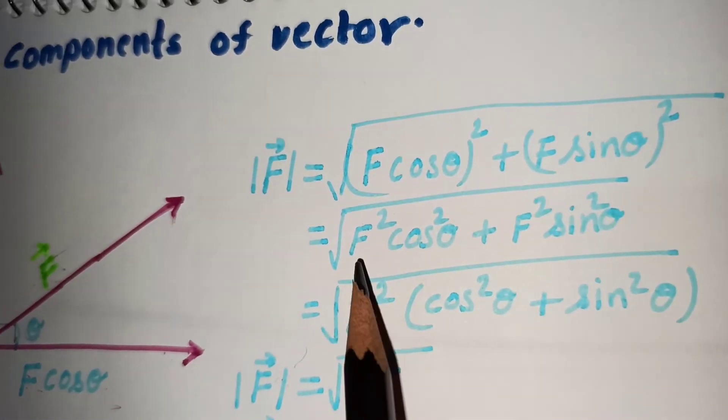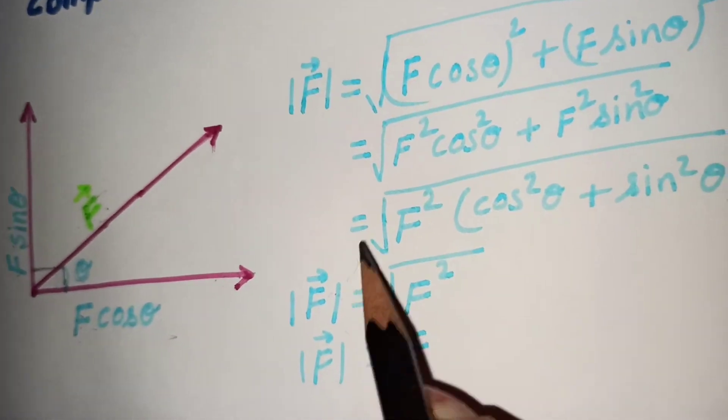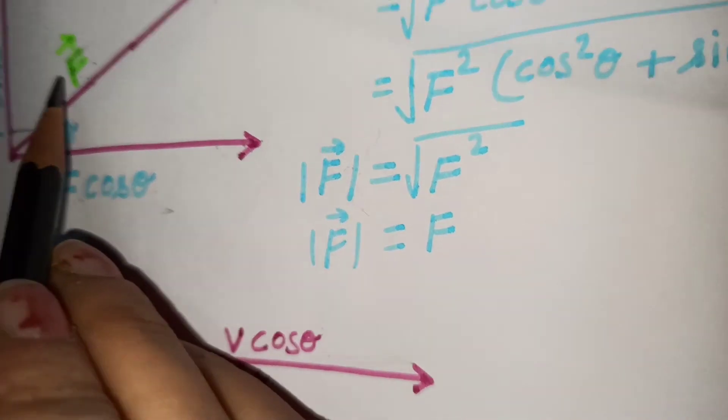When we solve it, f square cos square theta plus f square sine square theta over root, then we get finally f and this will be the magnitude of this vector f.